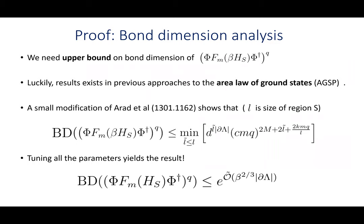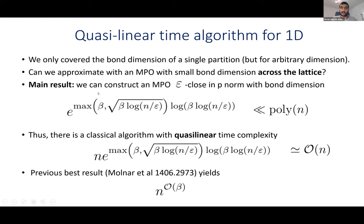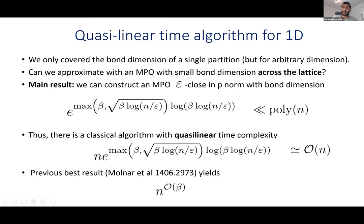Now I want to move to the next part, which shares some features with what I just said. That was about the area law. The algorithm part is different in that you care about different things. In the algorithm, you want to approximate the thermal state with an MPO, but now instead of caring about a single cut, we care about the bond dimension at every single site in the Hamiltonian — every single partition.